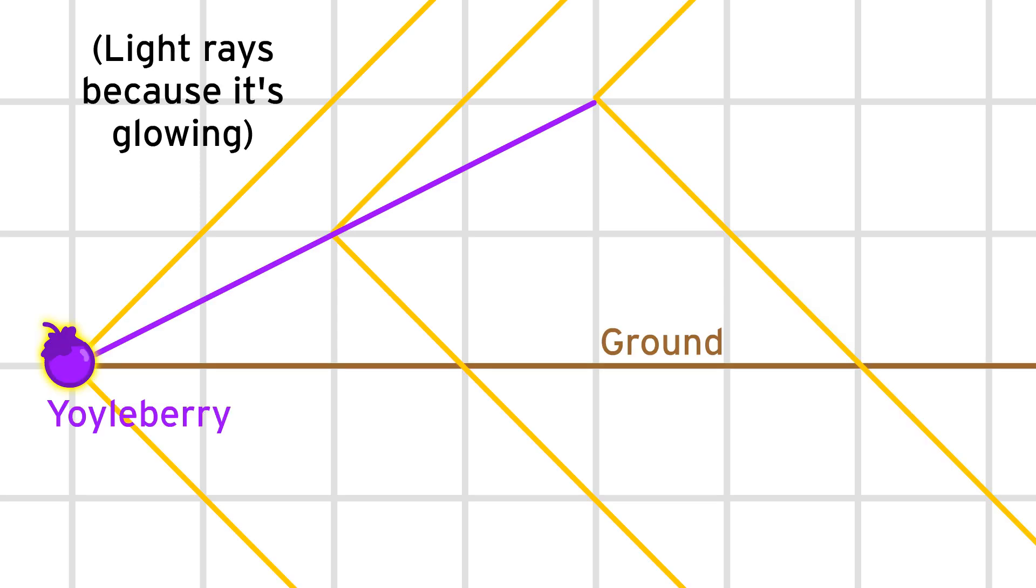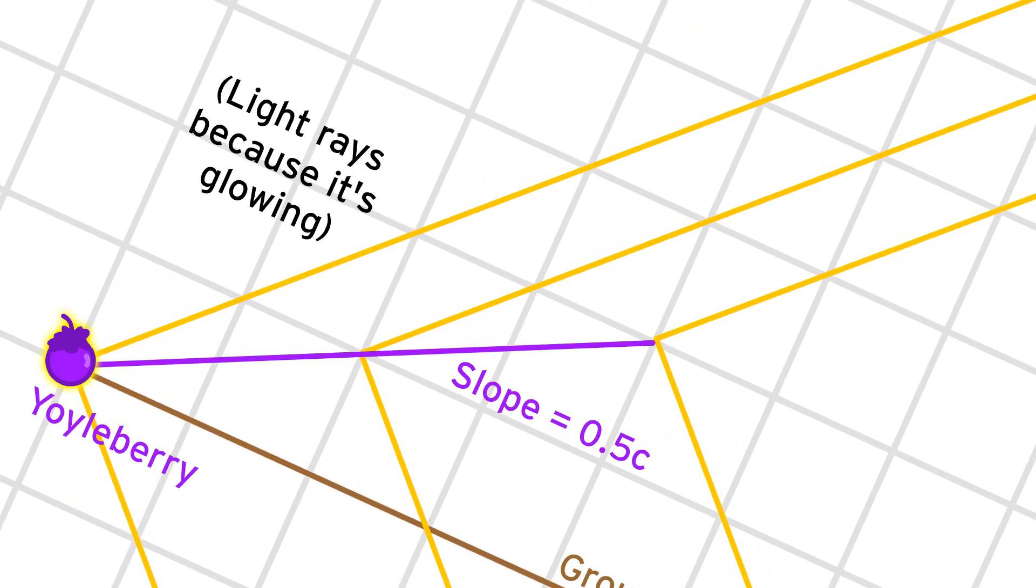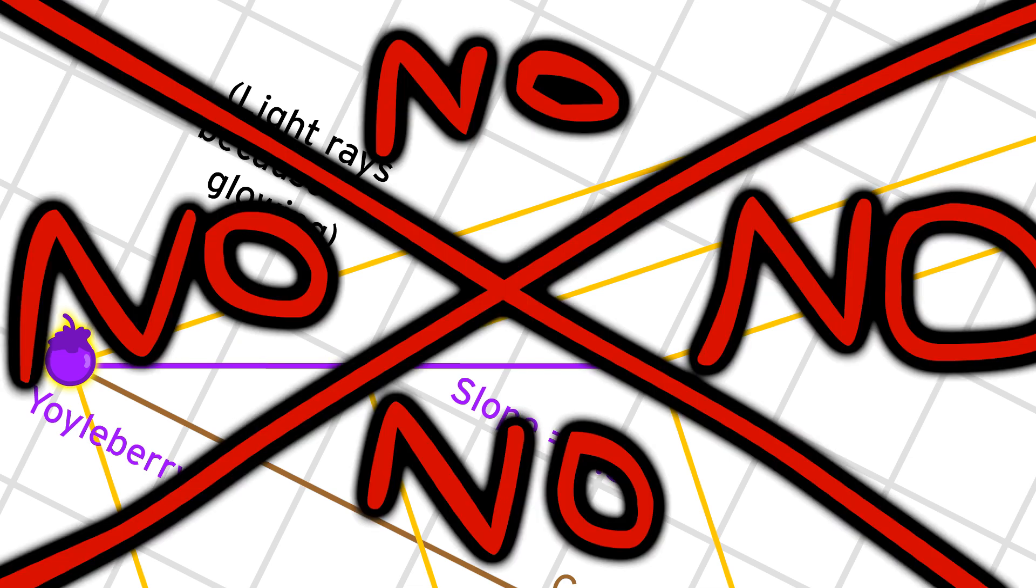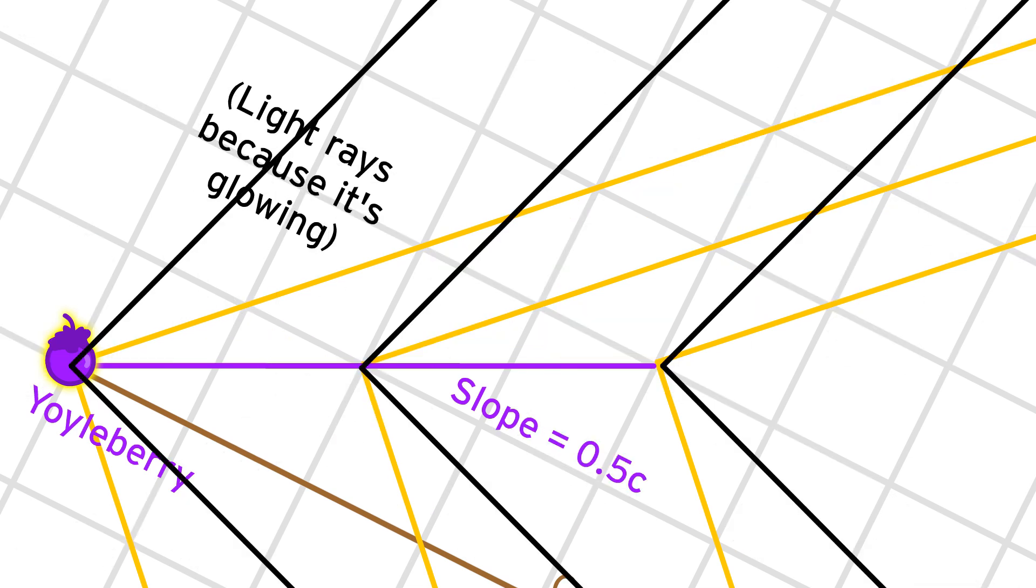Okay, so if we want to change our frame of reference from the ground to this glowing yoyalberry that's moving at half the speed of light, what do we do? Maybe we could rotate the whole graph to make its trajectory horizontal? No, that doesn't work. The speed of these light photons is no longer perfectly diagonal.